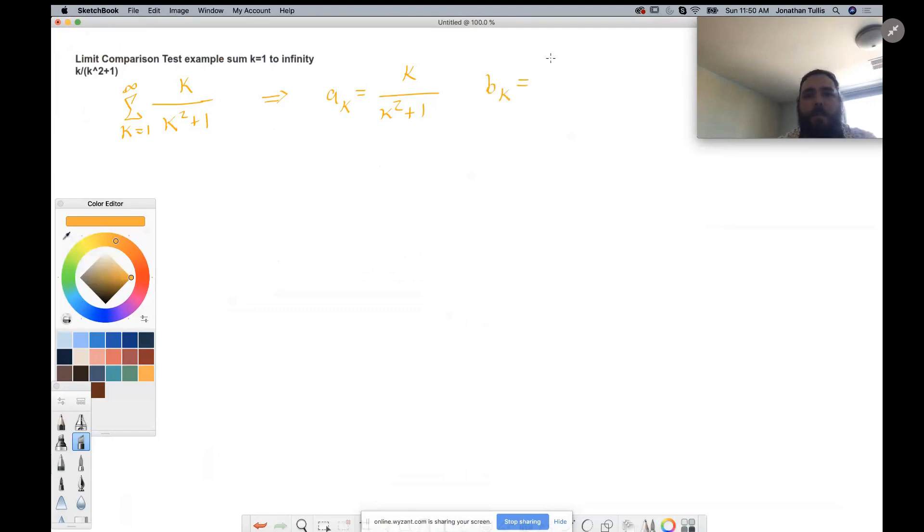Now, I'm just going to choose it because we have limited time, but if you're not getting the right b sub k, you can choose a different one. You could say b sub k is one over k squared plus one. You can make it whatever you want. You're comparing two things.